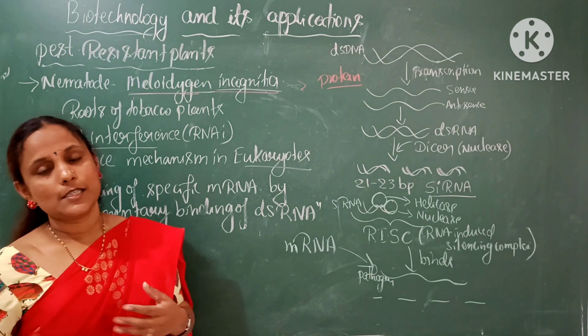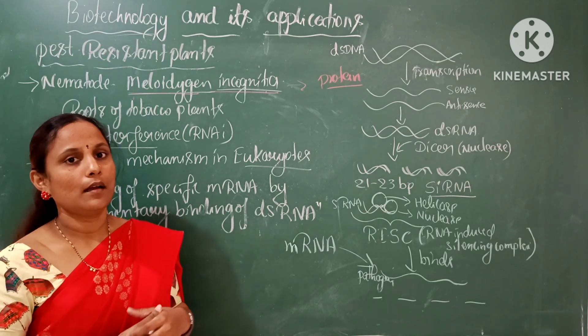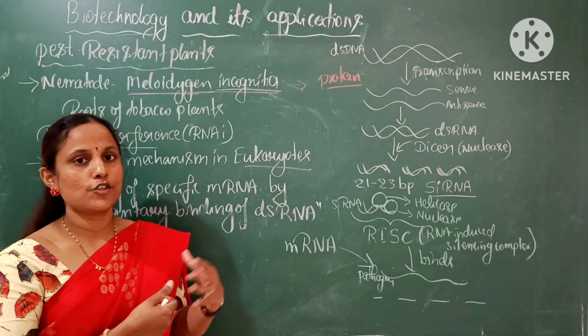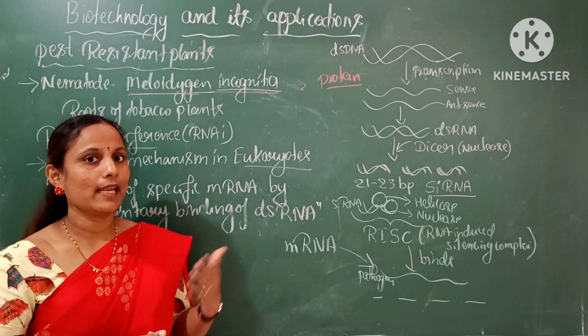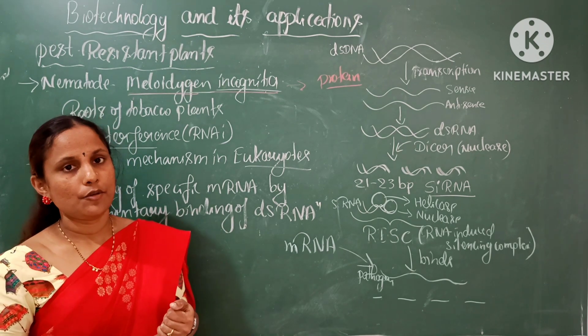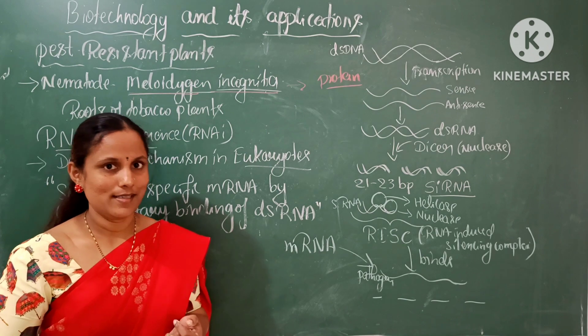In the next class, let us take up other aspects of biotechnology applications in agriculture, like the production of Flavr Savr tomato and the production of golden rice.